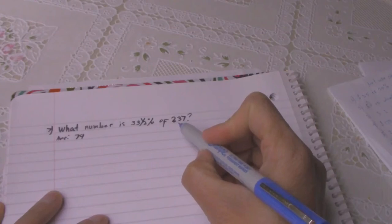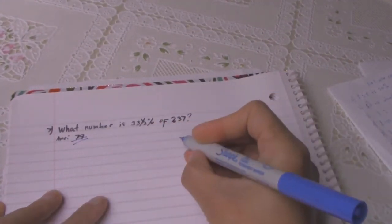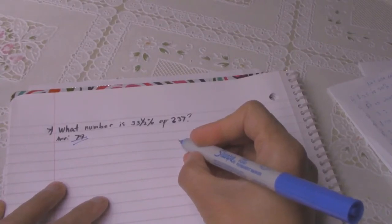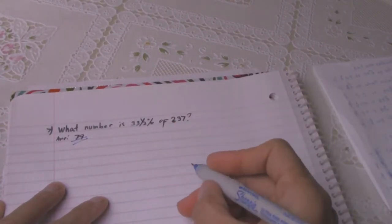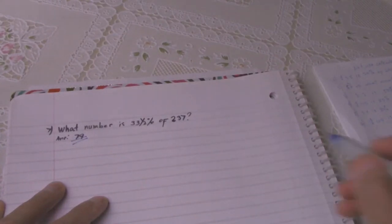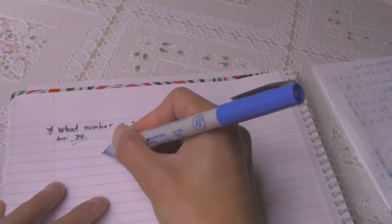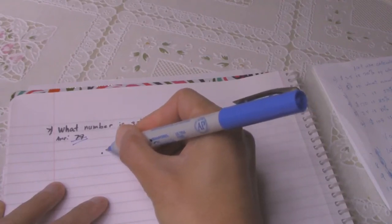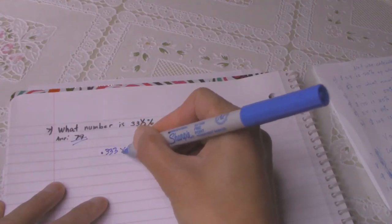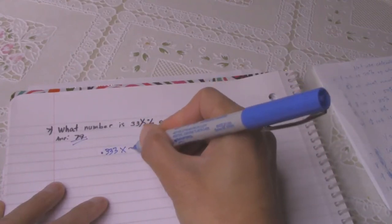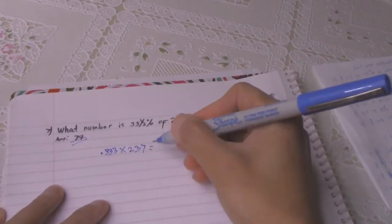Number 7: what number is 33 and a half percent of 237? Answer is 79. So how you get your answer is 0.333 times 237 equals 78.9, or round up to 79.